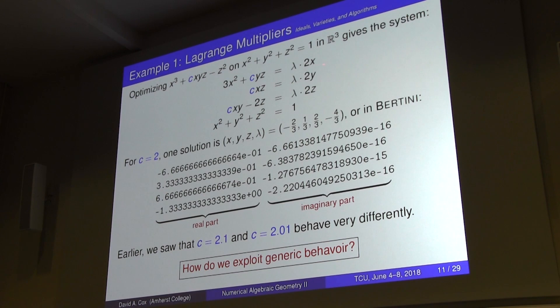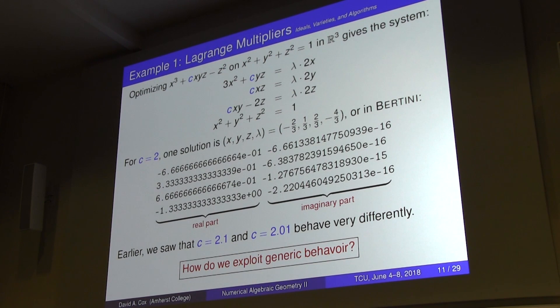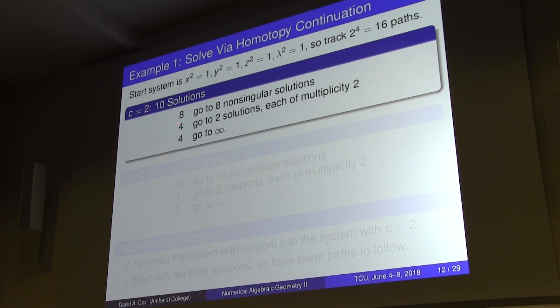If this were a completely generic system of degree two, I would expect 16 solutions by Bezout's theorem in projective space — but we don't have 16 finite solutions. Bertini tracks 16 paths: when C is two, eight go to eight non-singular solutions, four break into two pairs each mapping to the same solution giving two solutions of multiplicity two, and four paths go to infinity.